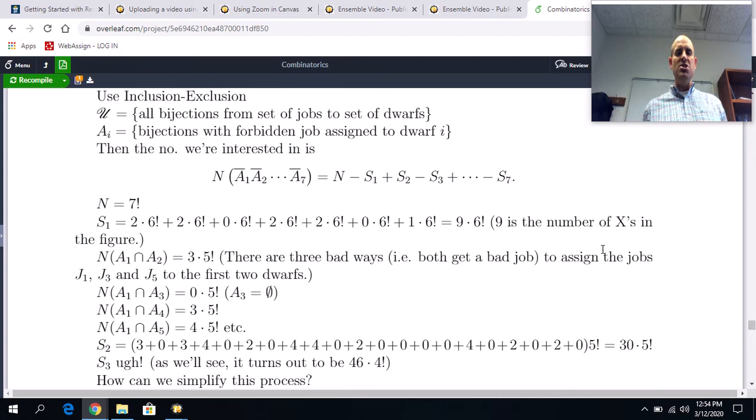And the thing is, we don't want all of the bijections. Remember, bijection is just a one-to-one correspondence between jobs and dwarves. We figured out that the number of bijections is seven factorial in this case. Every time you assign a dwarf to a job, that basically eliminates one row and one column from the diagram up there. We defined A_i to be the bijections with forbidden job assigned to the ith dwarf. And we thought about the fact that, okay, what we're really interested in doing is computing the number of things in the intersection of all the complements.